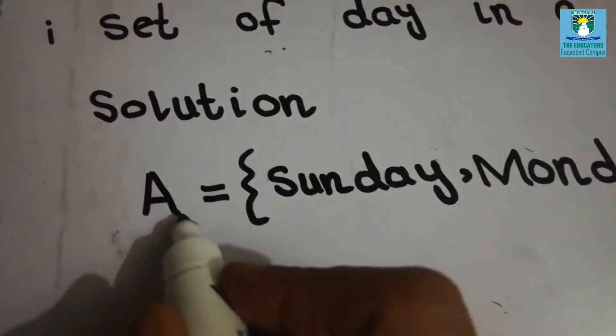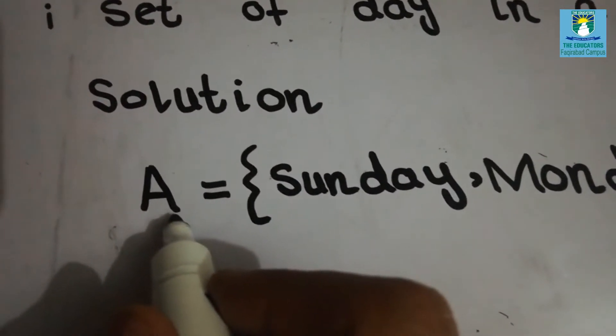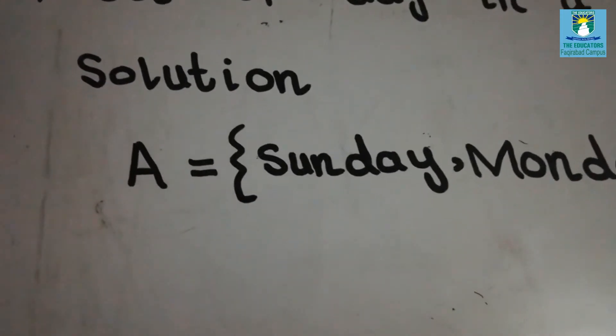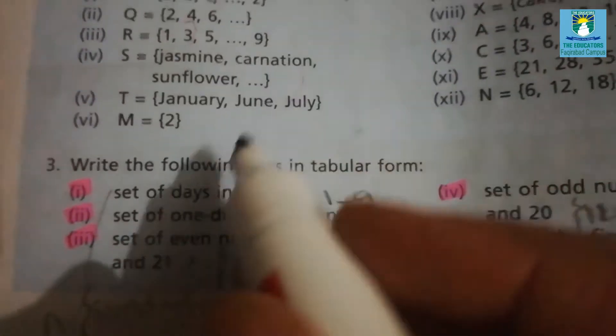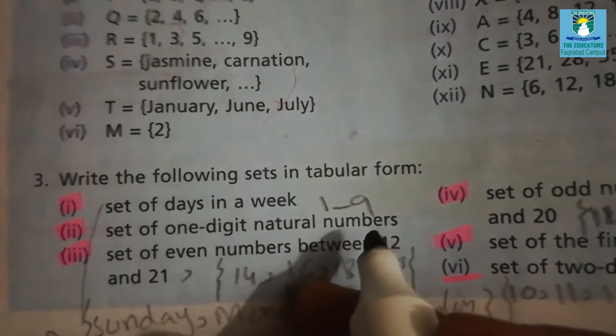And we will denote the set with capital letter A. You can use any capital letters. Move to next part. Part 2. Set of 1 digit natural numbers.